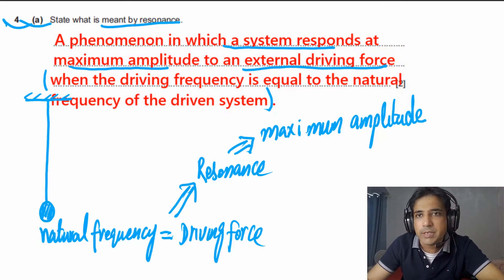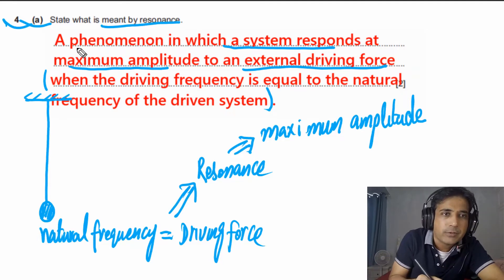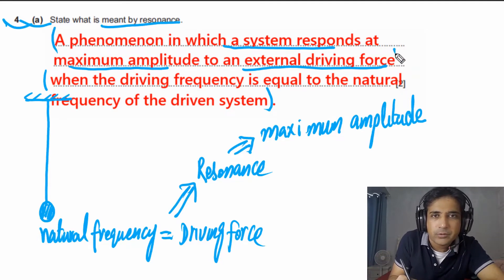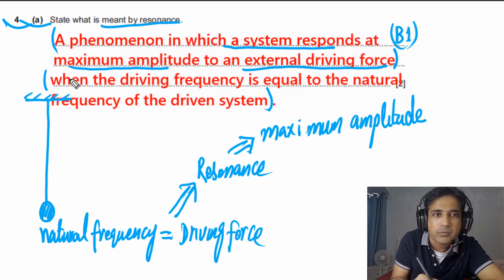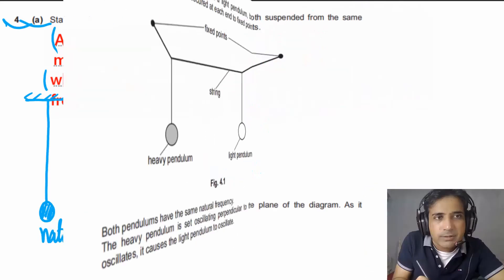This question has two marks. The first mark is awarded for stating that the system responds at maximum amplitude to an external driving force. The second mark is for stating that resonance occurs when the driving frequency equals the natural frequency of the driven system. Writing both points earns you two marks.